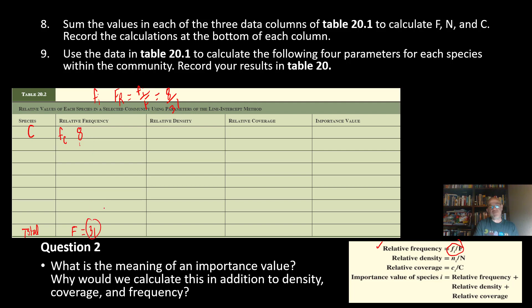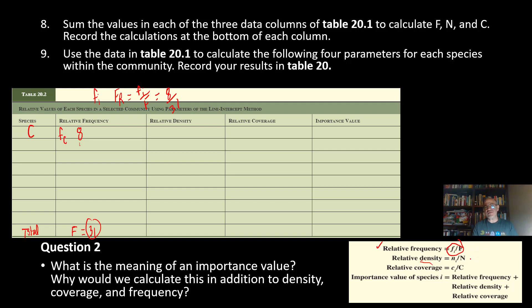You do the same thing for the relative number, which they refer to as relative density — it's a linear density because we were moving along a linear transect, which differs from area density. For the number, whatever the individual count is — for creosote I believe there were five individuals — you divide by the total capital N to get the relative density. Then for relative cover you take the individual coverage and divide by the total cover capital C.